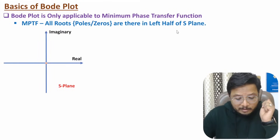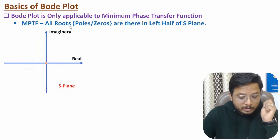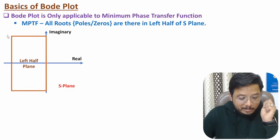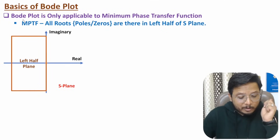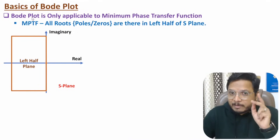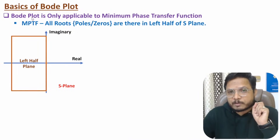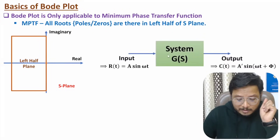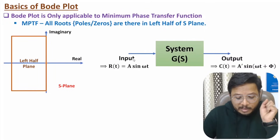In the s-plane, the horizontal axis is the real component and the vertical axis is the imaginary component. All poles and zeros must be in the left half of the s-plane for a minimum phase transfer function. For such a system we give an input signal A·sin(ωt) and vary the frequency.